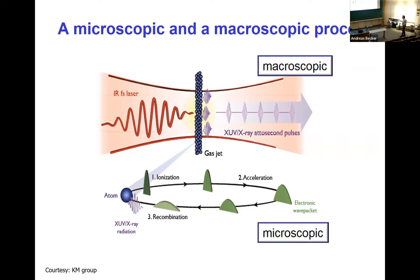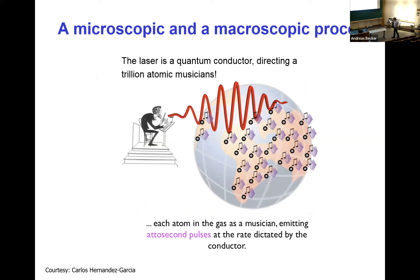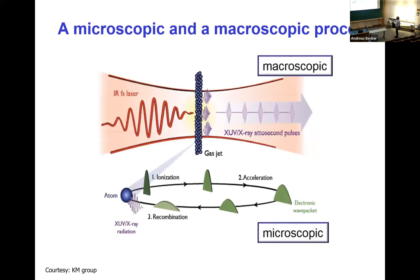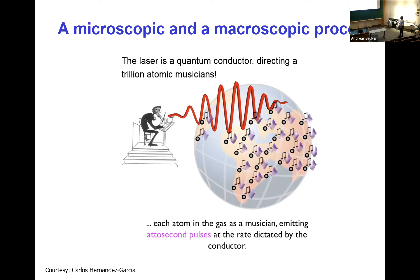With phase matching, you can generate these pulses at shorter wavelengths as attosecond pulses. A former postdoc at JILA, Carlos Hernandez Garcia, made a wonderful analogy: each atom is like a musician playing a melody. You want all these musicians playing in phase — you need a conductor, and the laser is that conductor. This is very much a focus of experimental work at JILA.